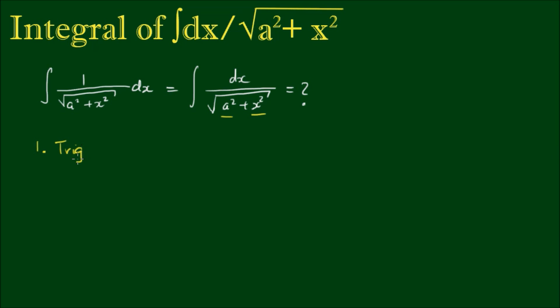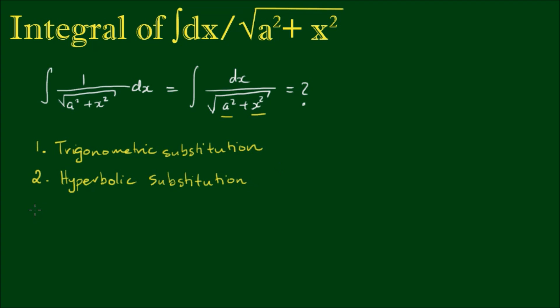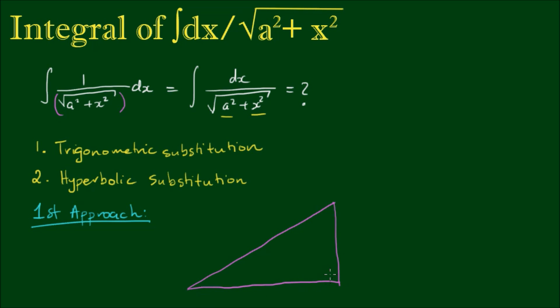We can certainly use a trigonometric substitution. We can also use another type of substitution — our second strategy — and that is a hyperbolic substitution. Let's explore our first approach. With the term the square root of a squared plus x squared, it's always a good mental exercise to try and make connections and remember where we've seen this expression before. One of the fundamental mathematical laws we would have learnt, perhaps even in primary school, is Pythagoras' Theorem.